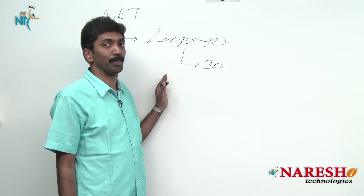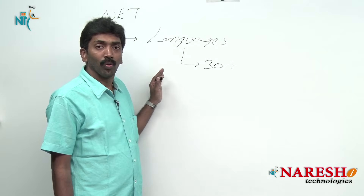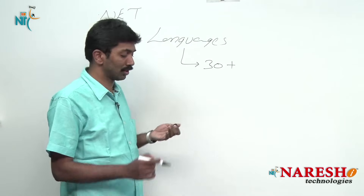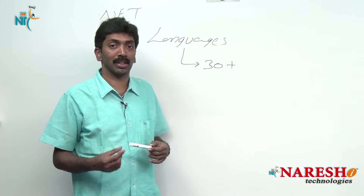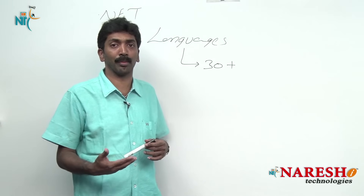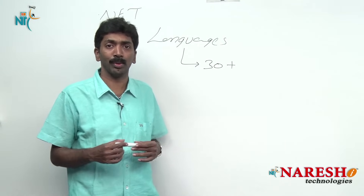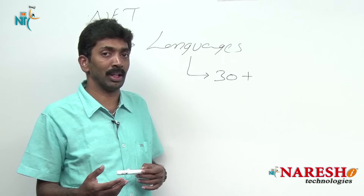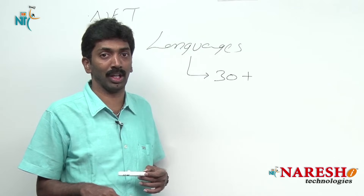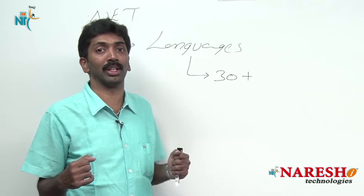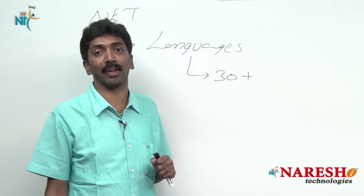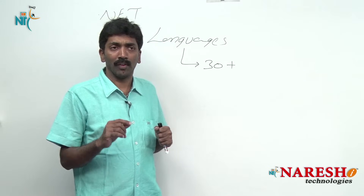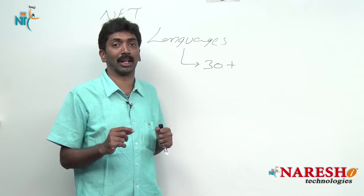When we hear 30 plus languages we get confused — what is the need for so many? The reason is that different people come from different backgrounds: some from COBOL, some from Pascal, some from Java, some from C or C++. When people from different backgrounds all need to work together, forcing them to use one language causes confusion. So Microsoft gave multiple languages, saying that if you come from a particular background, you can use a language available there.